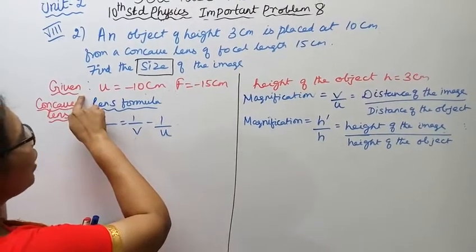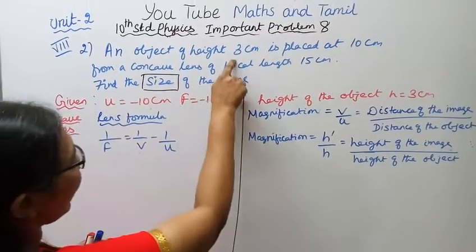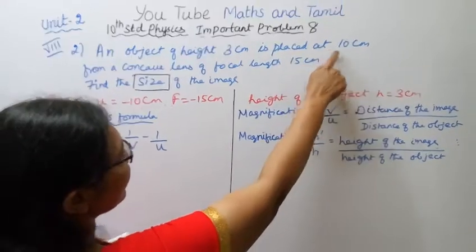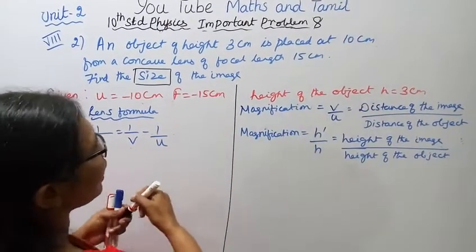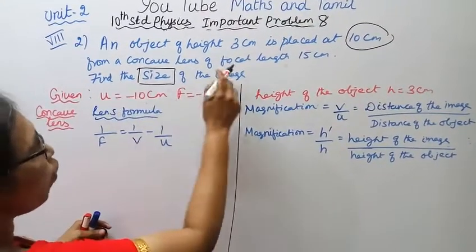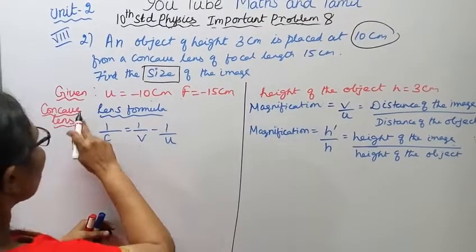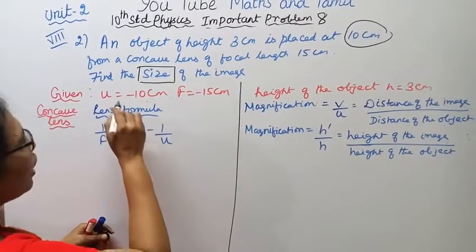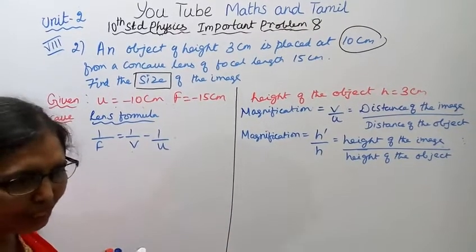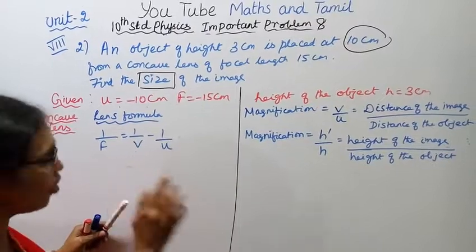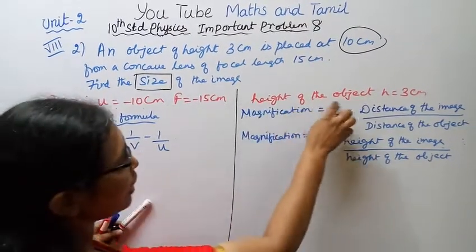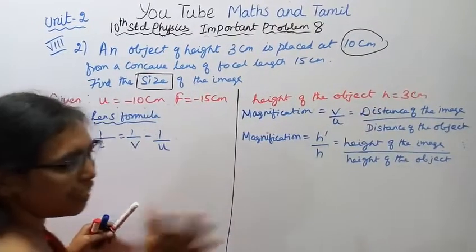Given: an object of height 3 cm is placed at 10 cm, so u = -10 cm. The focal length is 15 cm. For a concave lens, f = -15 cm. The height of the object h = 3 cm. Both u and f are negative values.